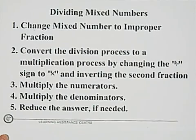Second, convert the division process to a multiplication process by changing the division sign to multiplication and inverting the second fraction. The third is multiply the numerators, and the fourth multiply the denominators, and the last step is reduce the answer if needed.